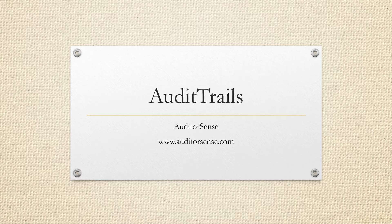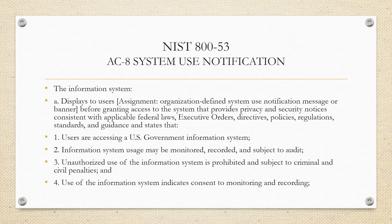Hello, welcome back to Audit Trails. This is Jake from Auditor Sense, and today we're going to jump into another NIST 800-53 control: AC-8. AC-8 is all about system use notifications. This control at first glance might look a little daunting — it's rather long as far as the description goes — but we're going to jump into it. I'll explain it and then towards the end show an example of what this looks like.